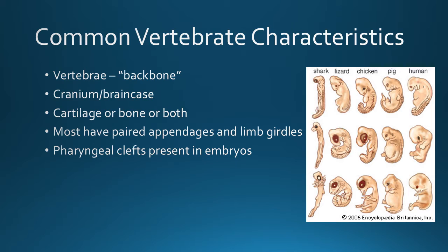There are a few characteristics common to all vertebrates. They have vertebrae, or a backbone. They also have a brain case, or cranium. They have cartilage or bone or both — sharks, for example, just have cartilage. Most vertebrates have paired appendages, like our two arms or a fish's pectoral fins, and limb girdles such as the pelvis. The pharyngeal clefts, sometimes called gill slits, are present in the embryos of all vertebrates. In early embryonic development you can see those in all vertebrates, but later they disappear or become other structures. In fish, they become the gills.